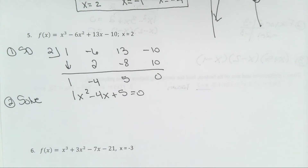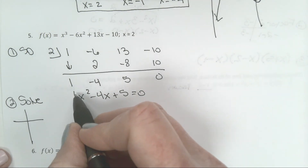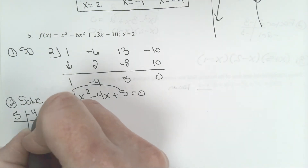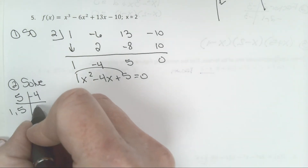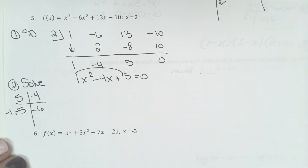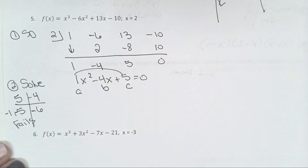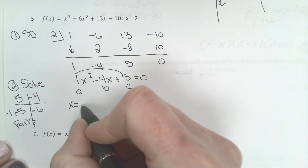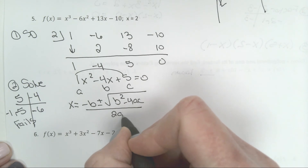Step 2 is to solve. I'll always try to factor first. When I take A times C, I want factors of 5 that add up to negative 4. 1 times 5 is 5, but that adds up to 6. Making them both negative gives negative 6 — so factoring fails. When factoring fails, the backup plan is the quadratic formula: x equals negative b plus or minus square root of b squared minus 4ac, all over 2a.